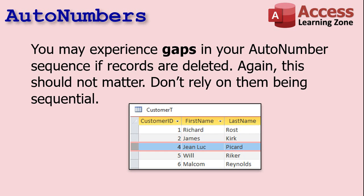One important thing about auto numbers is that everyone always complains they're not necessarily sequential. By default, they'll start at 1 and count up. However, if you delete a record — which I don't recommend — or if another user starts to add a record and then cancels, you may have gaps in your auto number sequence. Again, this should not matter. Don't rely on them being sequential.